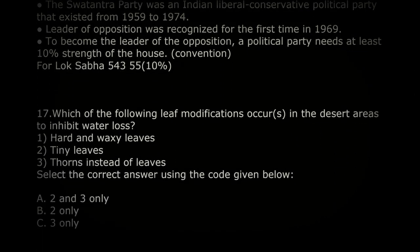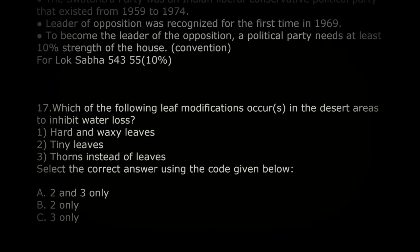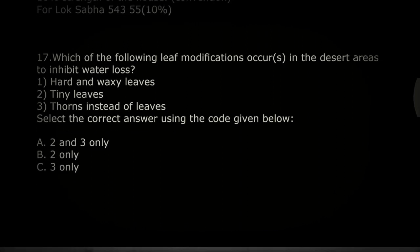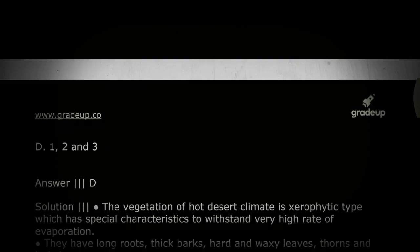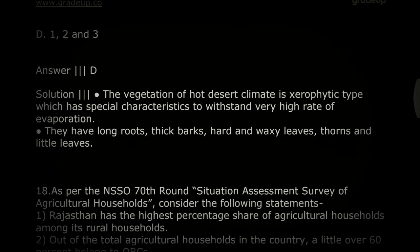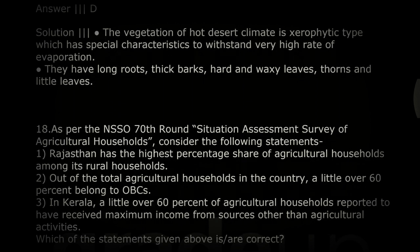Which of the following leaf modifications occur in desert areas to inhibit water loss? All options are correct: hard and waxy leaves, tiny leaves, and thorns. The vegetation of hot desert climate is xerophytic type, which has special characteristics to withstand high evaporation — including long roots, thick barks, hard and waxy leaves, thorns, and little leaves.